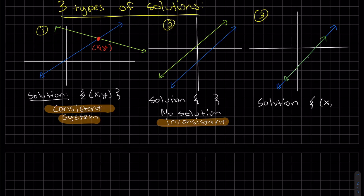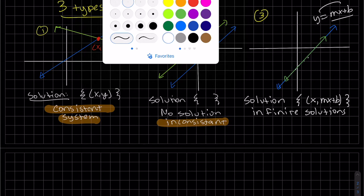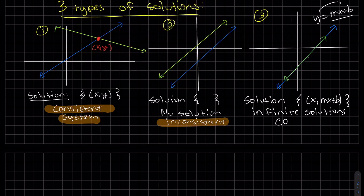So my x can be anything. And my y, let's say this y is mx plus b, if you solve the equation for y. So my y is mx plus b. That's my y. Y depends on x. And it's infinite solutions. And this is actually consistent because it has solutions.